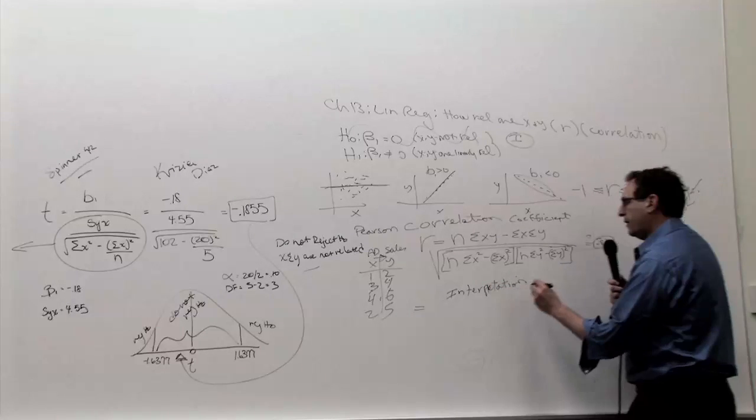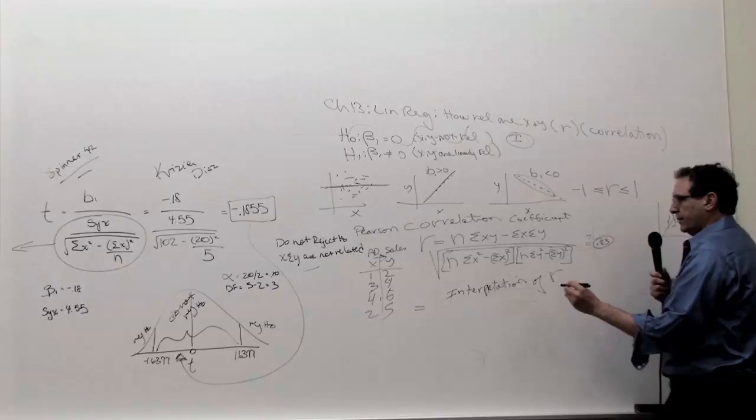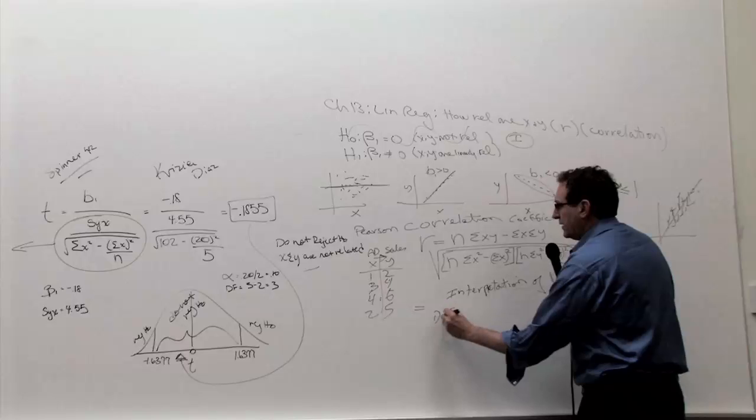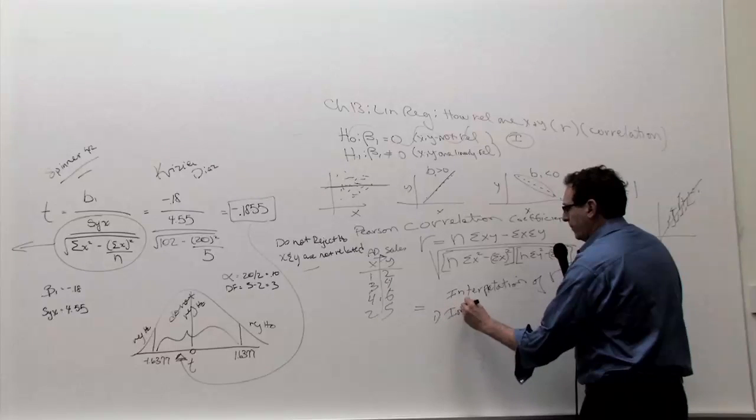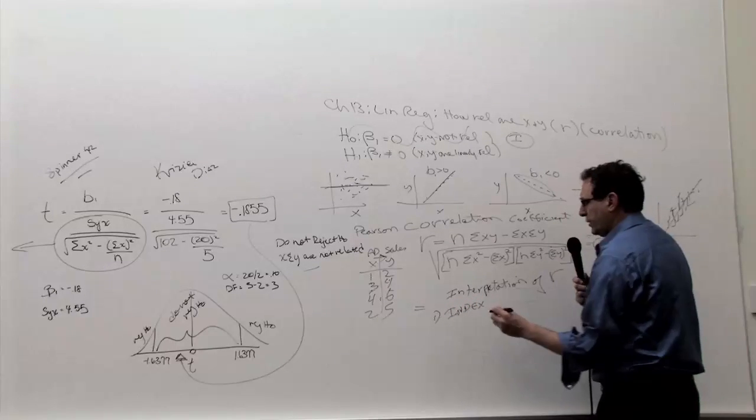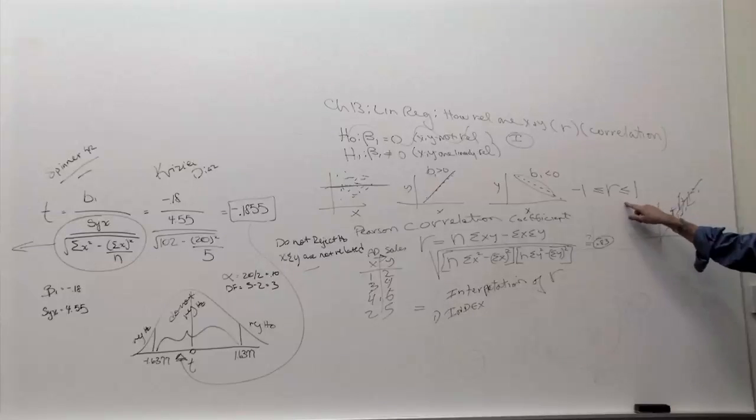The first interpretation of R is simply as an index. In other words, it goes between, like I pointed out, minus 1 and plus 1.